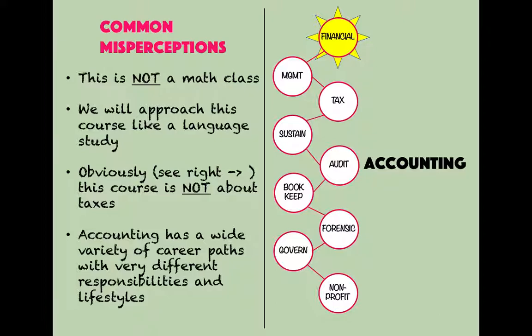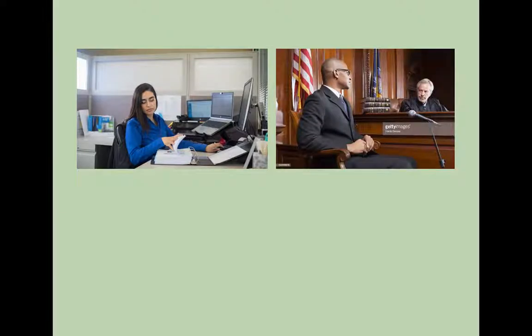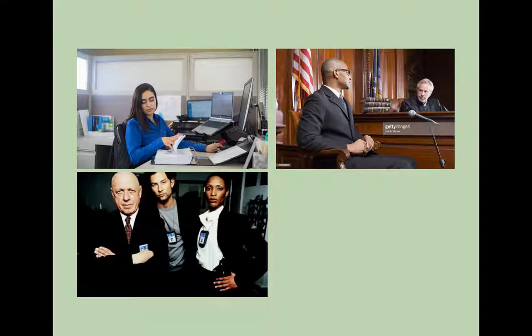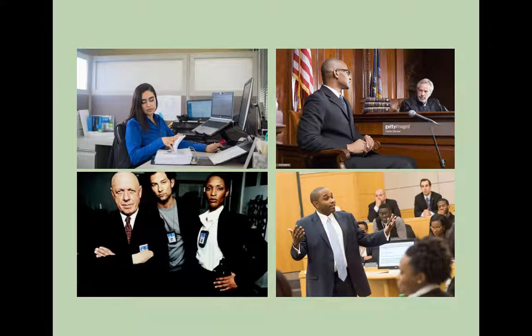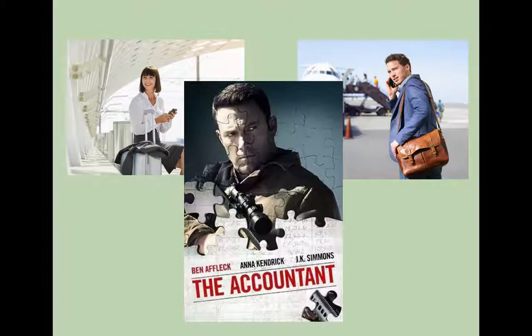Accounting has a wide variety of career paths with very different responsibilities and lifestyles. Some accountants sit at a desk, crunch numbers, and use those numbers to help businesses make decisions. Some investigate financial crimes and testify in court as expert witnesses. Some work for federal agencies like the FBI, investigating crimes. Some teach. Some travel locally or internationally. And then there are some accountants who carry machine guns and work for the mob — but most of the time, that's not really true.